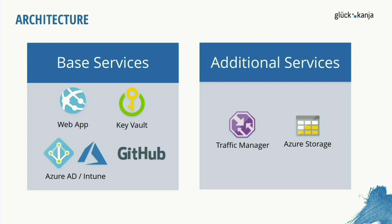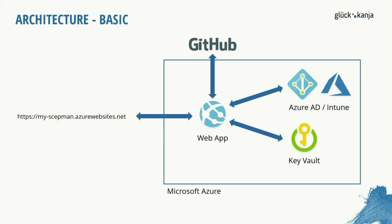For example, if you don't want auto-updates from the Glueckkanja GitHub, you can place the artifacts in an Azure Storage account and then you have full control over your version. In the basic or default deployment, the web app and the Key Vault are connected to Azure Active Directory and Intune. GitHub is outside the Azure network — we only load the artifacts from GitHub once when the web app starts, and then the web app runs without the GitHub repository.